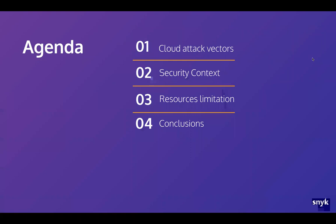So what exactly are we going to talk about today? We're going to do a really short intro about the potential problems and cloud attack vectors, just as a background. Then we'll continue to talk about three different issues as part of Kubernetes configuration. We will show how easy it is to fix different potential problems that you can have in production. We'll start by talking about security contexts, and then we'll talk about resource limitations. Let's start.